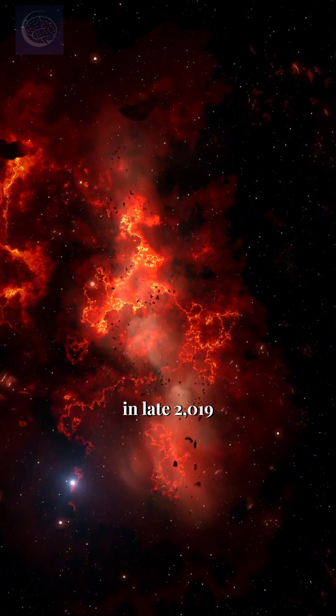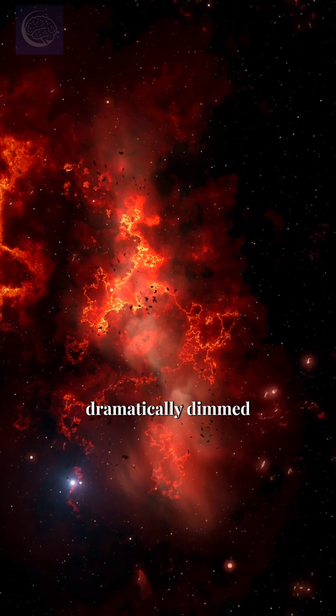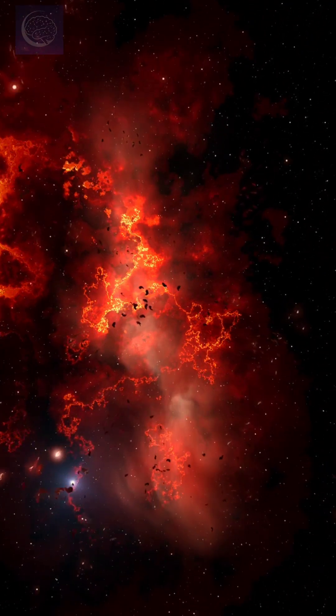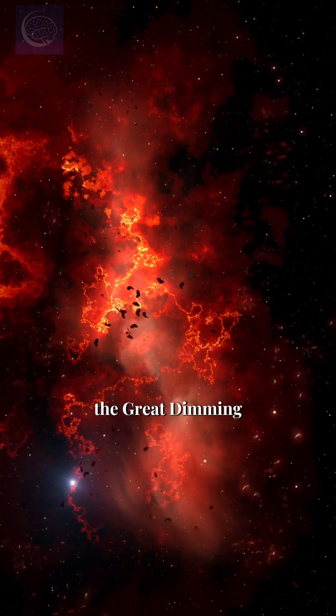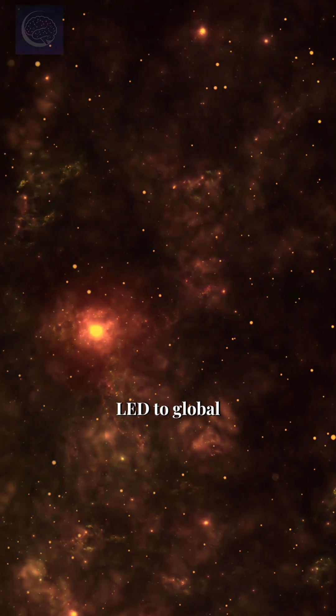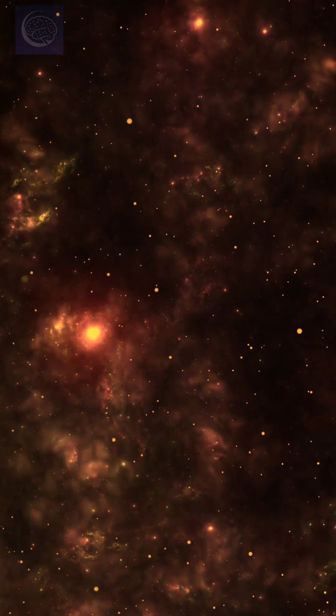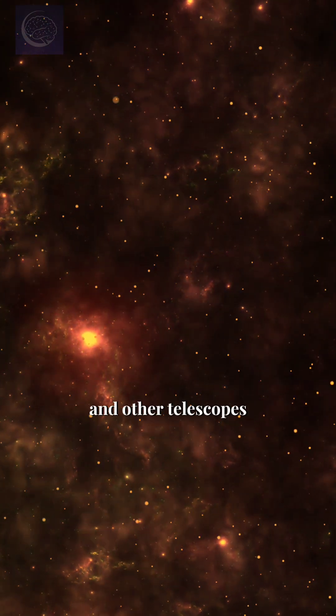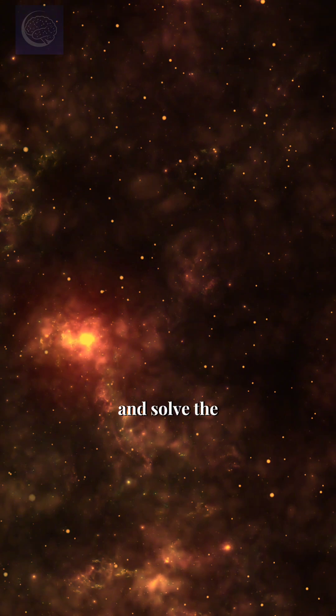In late 2019, Betelgeuse suddenly and dramatically dimmed, losing almost two-thirds of its brightness. The event, dubbed the Great Dimming, led to global speculation: was this the final moment? NASA's Hubble and other telescopes rushed to investigate and solve the mystery.